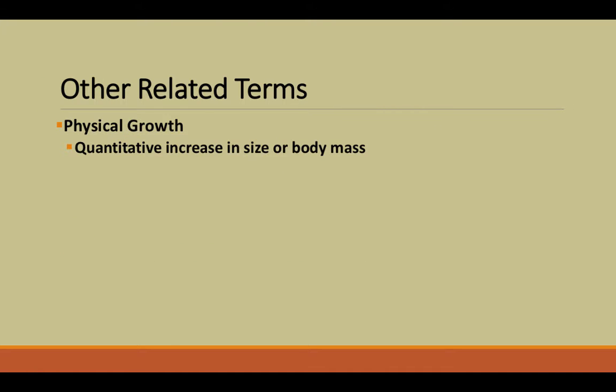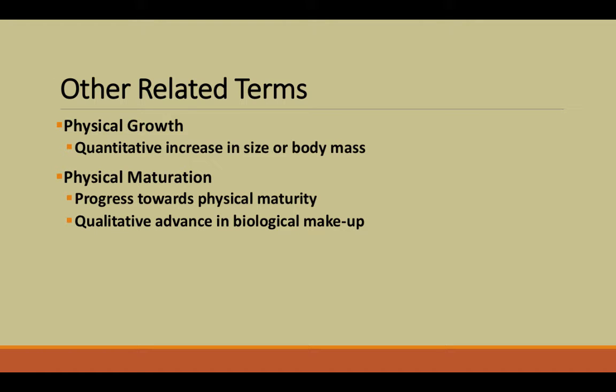Other related terms include physical growth, which is the quantitative increase in size or body mass. Physical maturation is progress towards physical maturity — qualitative advances in biological makeup. Physical growth refers to increases in height, weight, or body circumference, while physical maturation refers to hormonal changes and qualitative aspects of how we change as we approach maturity, such as signs of puberty or hormonal changes at different stages of aging.